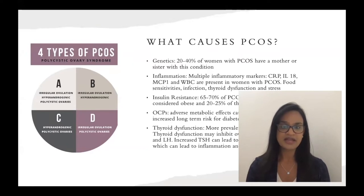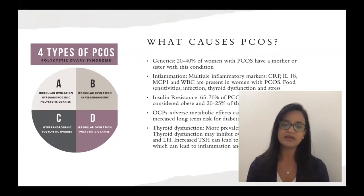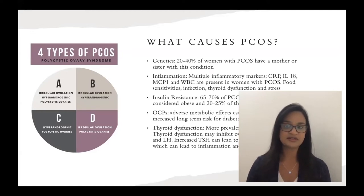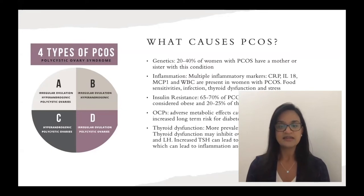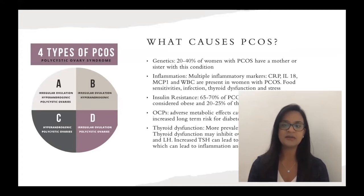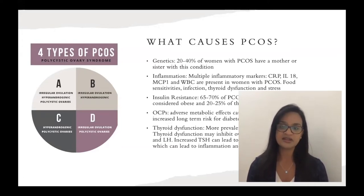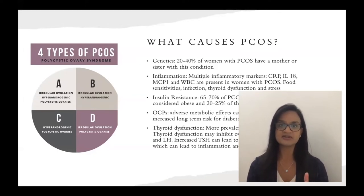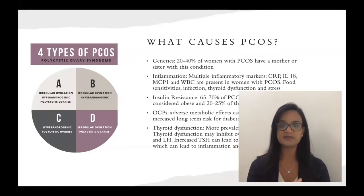There is another type of PCOS which is OCP-induced. When women are on OCPs, they can tend to gain weight based on their metabolism. The adverse metabolic effects causing insulin resistance and increased long-term risk for diabetes and cardiovascular disease actually come from medication-induced causes. Thyroid dysfunction is also more prevalent in women with PCOS — it's not a cause of PCOS, but thyroid dysfunction can inhibit ovulation by affecting FSH and LH. Increased TSH can lead to increased adipose tissue, which leads to inflammation and insulin resistance. There's no single diagnostic criteria to determine which type you are — people can move through these phenotypes in various parts of their lives.